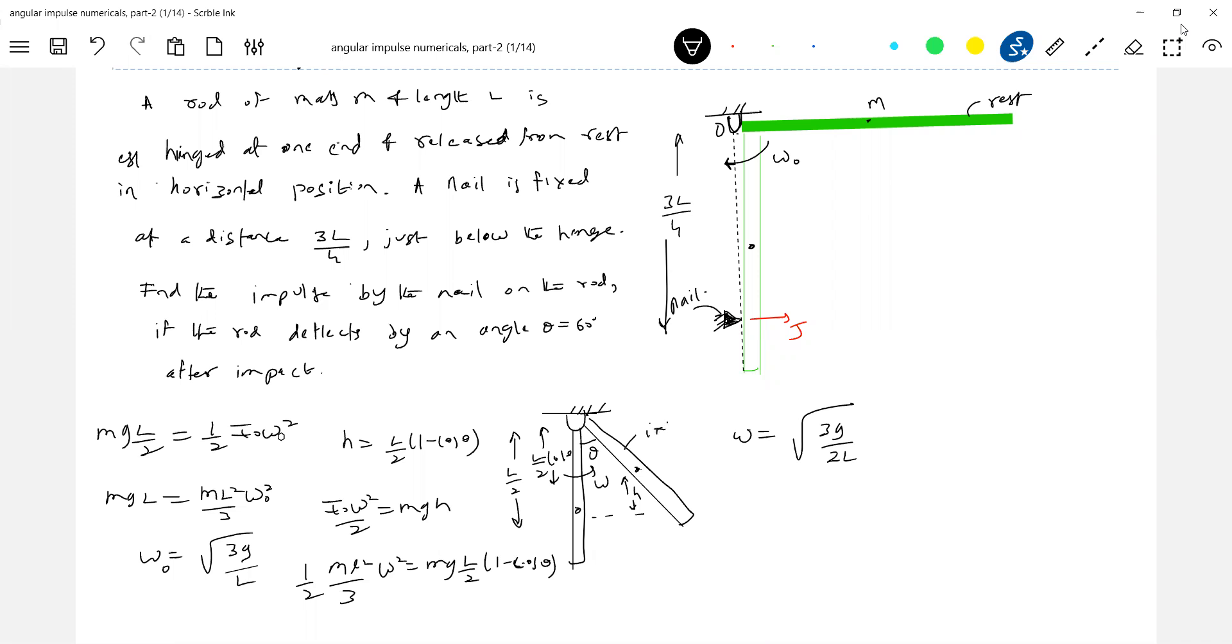It will come to instantaneous rest. Now can we calculate the impulse? I'll apply the angular impulse equation. What was the initial angular momentum of the rod? I₀ω₀. Final angular momentum? Iω. What is the angular impulse-angular momentum equation? L_initial + angular impulse = L_final. This is -Jθ = -Lf. Why the negative sign?